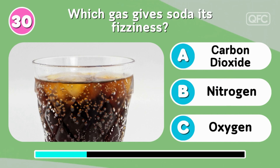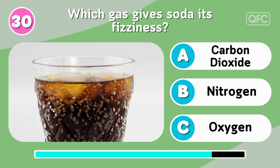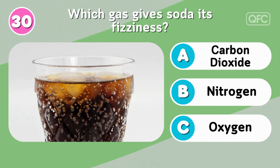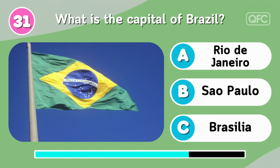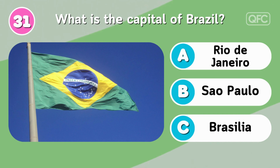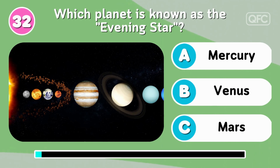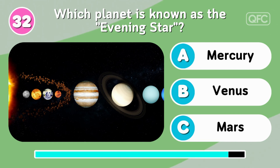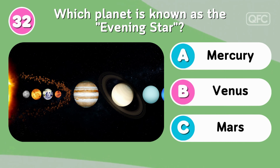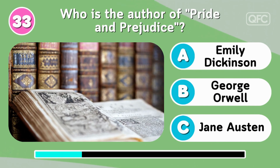Which gas gives soda its fizziness? Carbon dioxide. Which planet is known as the evening star? Venus. Who is the author of Pride and Prejudice?